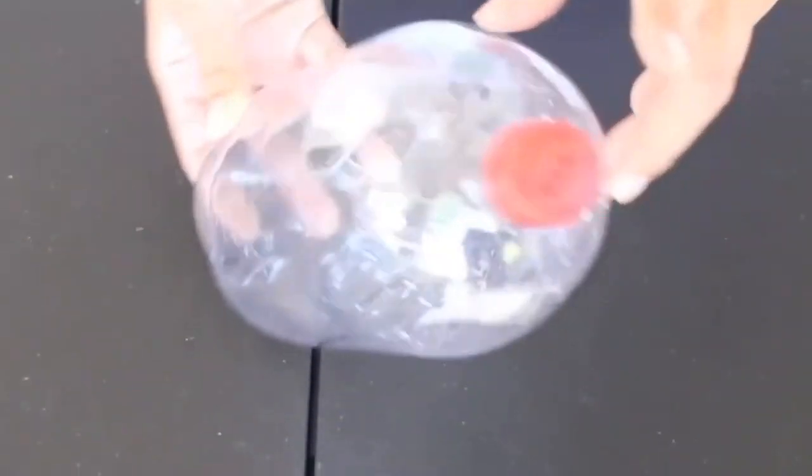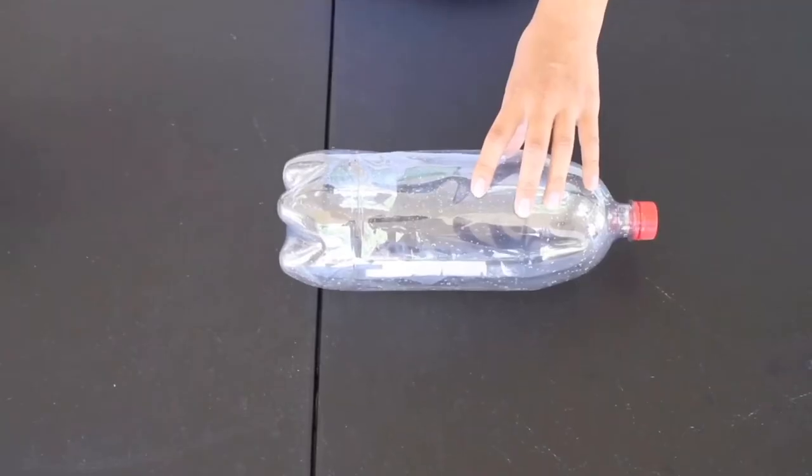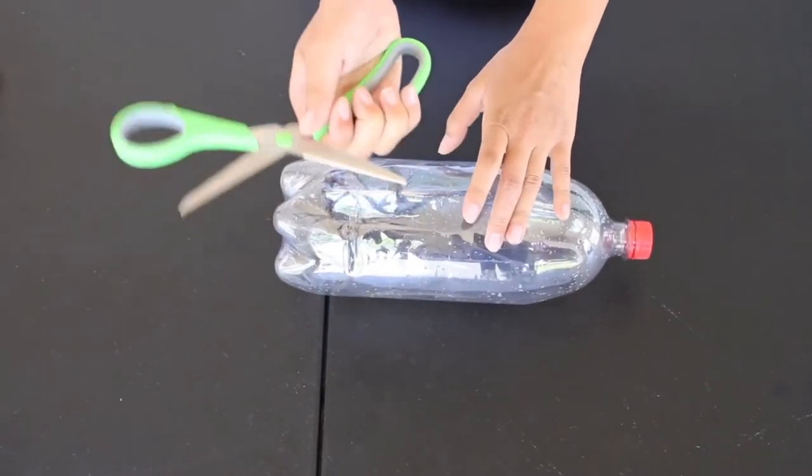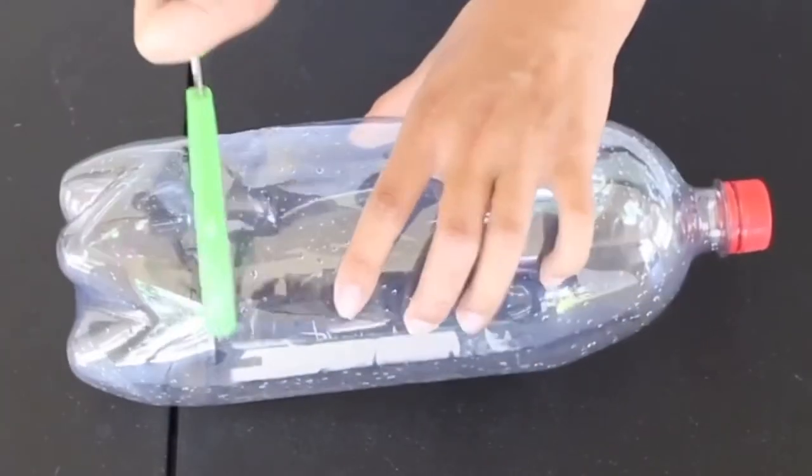We will now start with the bottle. We will be poking a hole in it. For this video, you can use scissors, but if you don't feel comfortable doing that, you may also use a nail or even your hot glue gun that was provided in your kit.